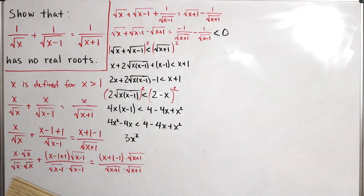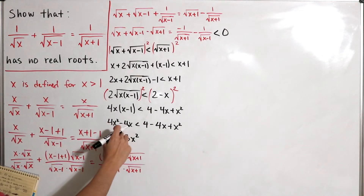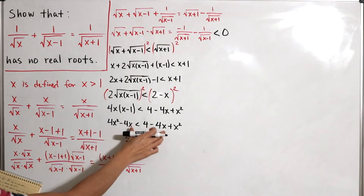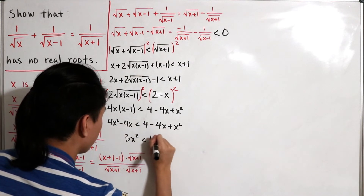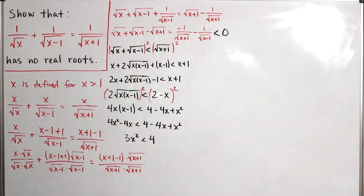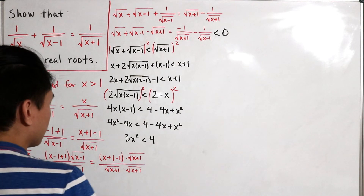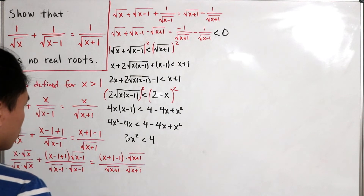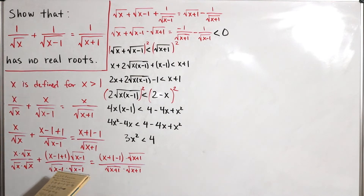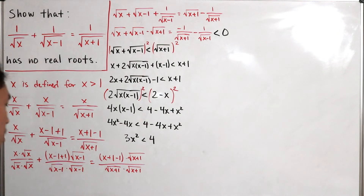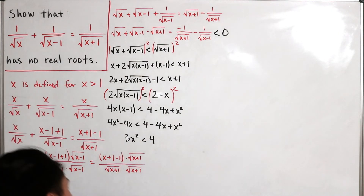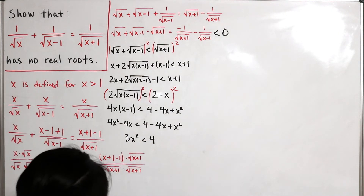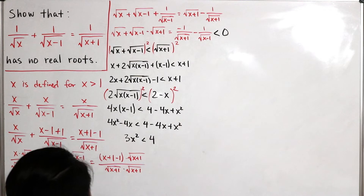After simplification, the four-x terms cancel and we're left with 3x squared less than 4. This is straightforward to solve and will yield two values of x since we have x squared.